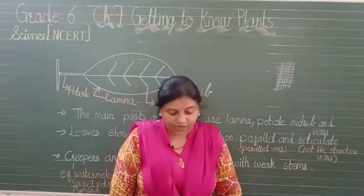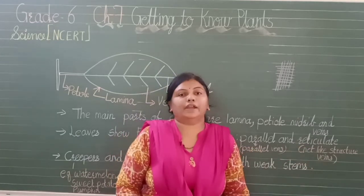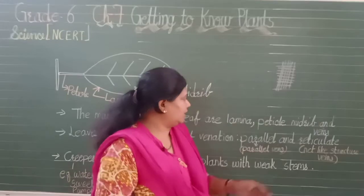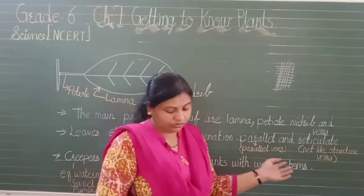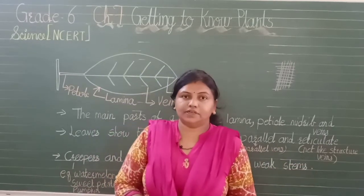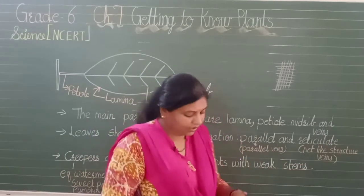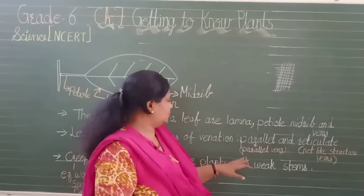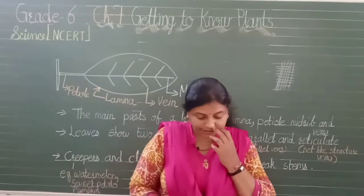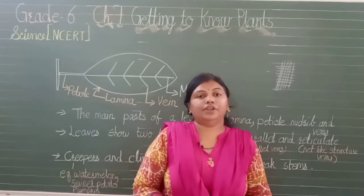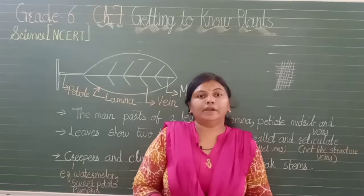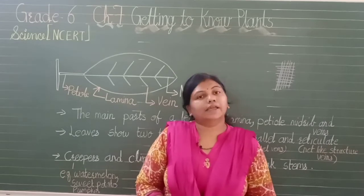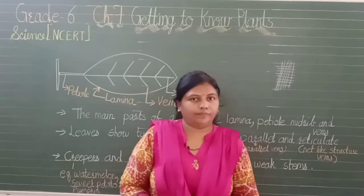Examples of reticulate venation are rose, tulsi and hibiscus. Examples of parallel venation are plants like grains, banana, grass and maize.